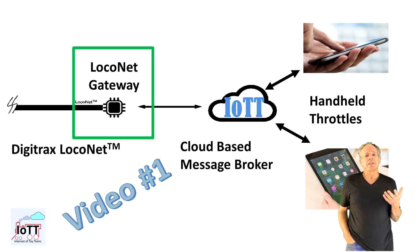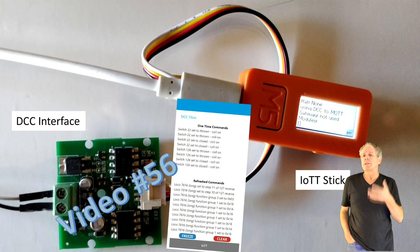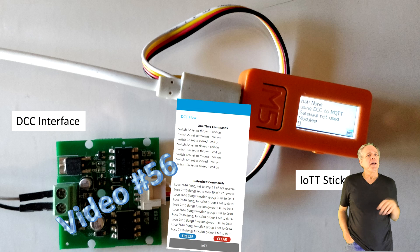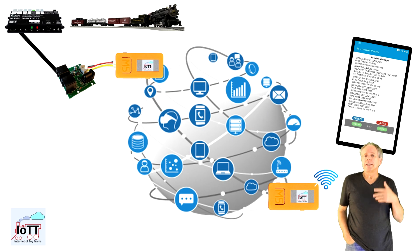It started out with the LocoNet to MQTT gateway in video number one. Later, I added a DCC interface and it became possible to view and distribute DCC commands via MQTT. The nice thing about MQTT is that it is an established transport protocol with public servers available on the Internet, so sending LocoNet commands all around the globe is a piece of cake.